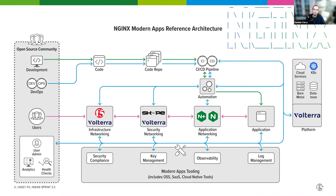Infrastructure as code also frees you up to have a more accurate representation of your production environment throughout the non-production stages and life cycles of your application. At the end of the day, that provides more resiliency because you're able to better test your code and how it's actually going to run in production.